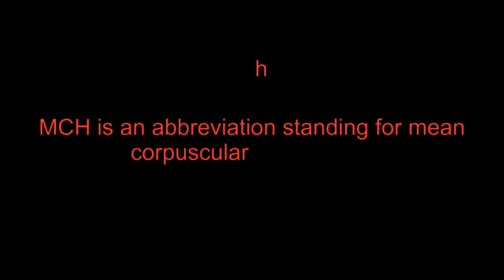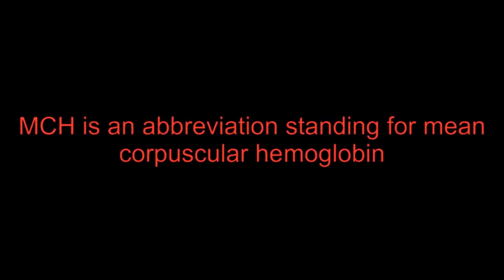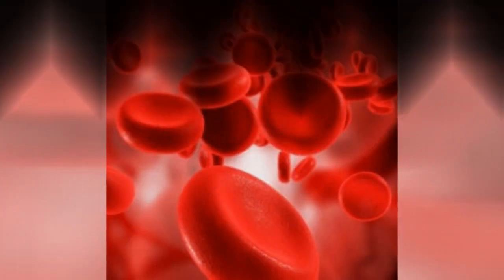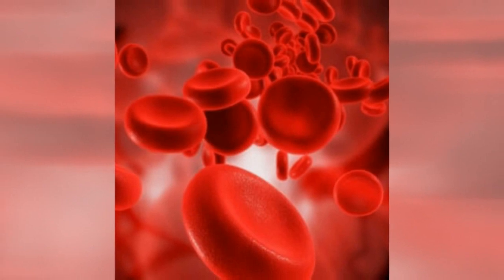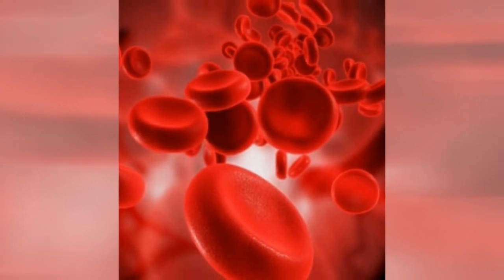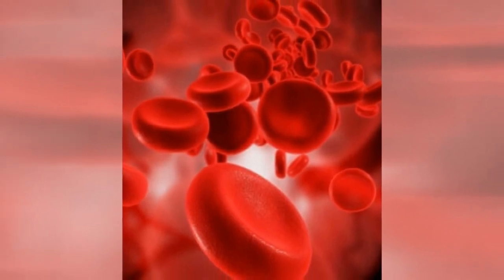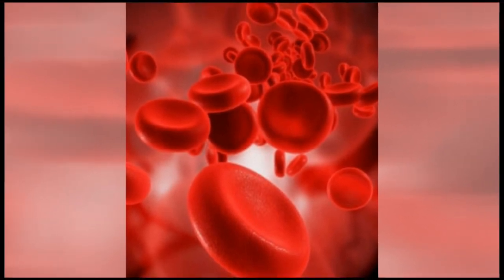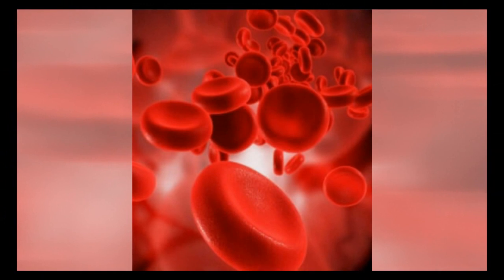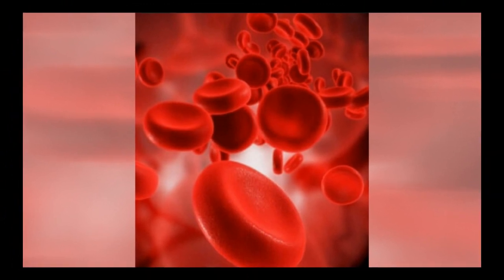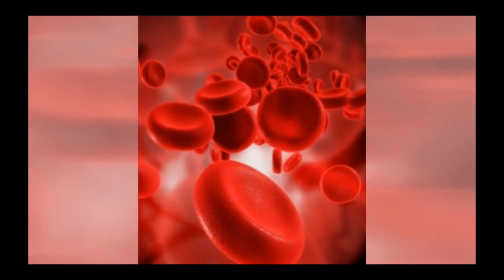MCH is an abbreviation standing for mean corpuscular hemoglobin. The MCH is a calculation showing the average amount of hemoglobin in one red blood cell. A complete blood count test is very crucial in helping us observe the MCH levels in blood.